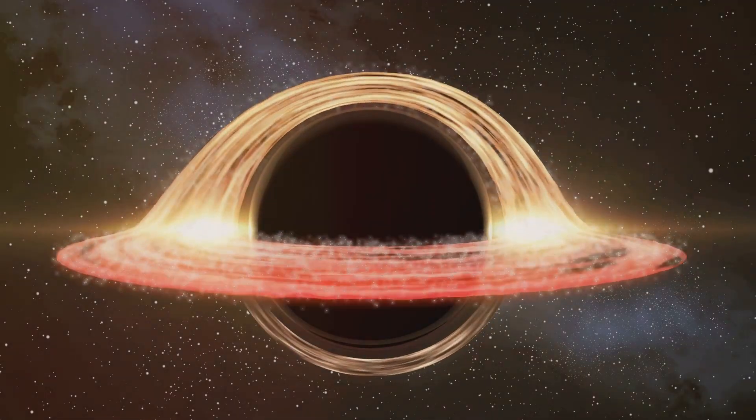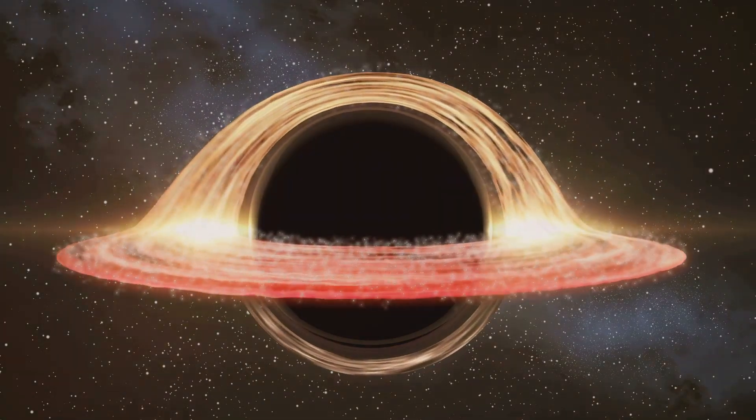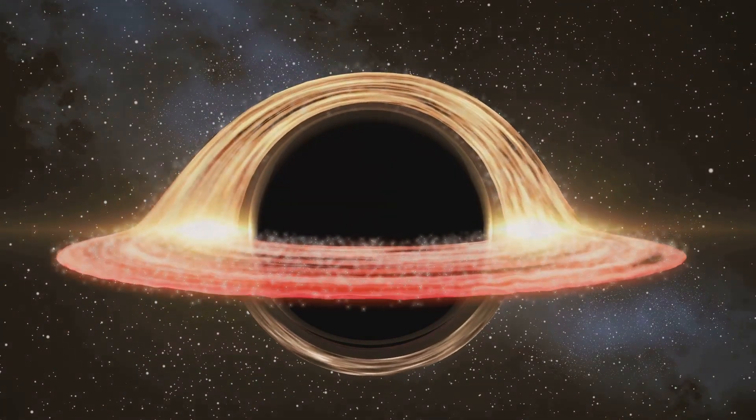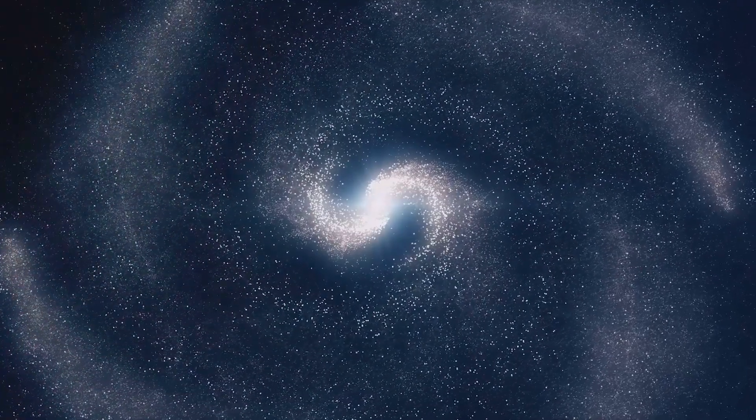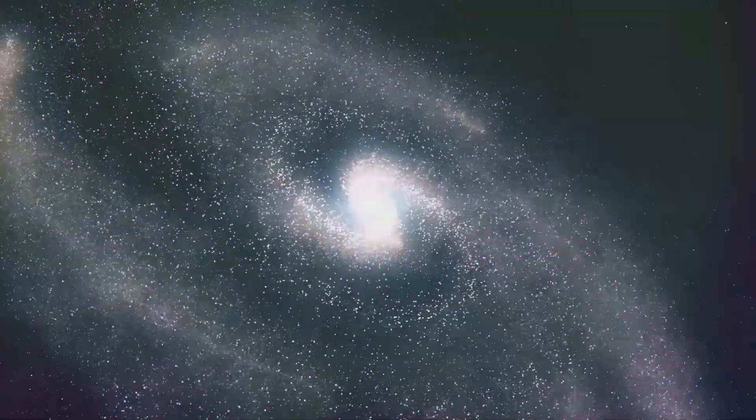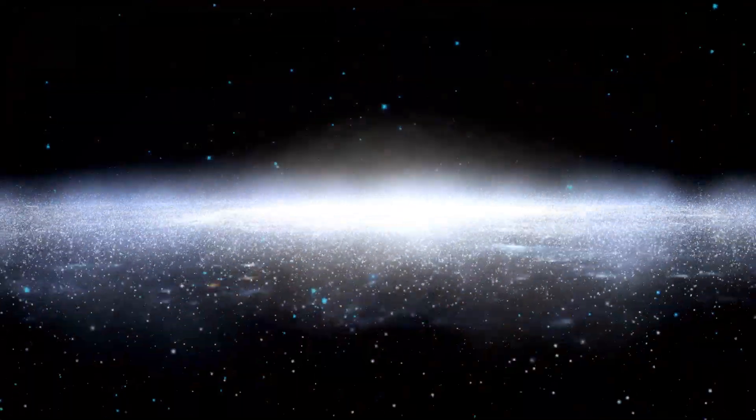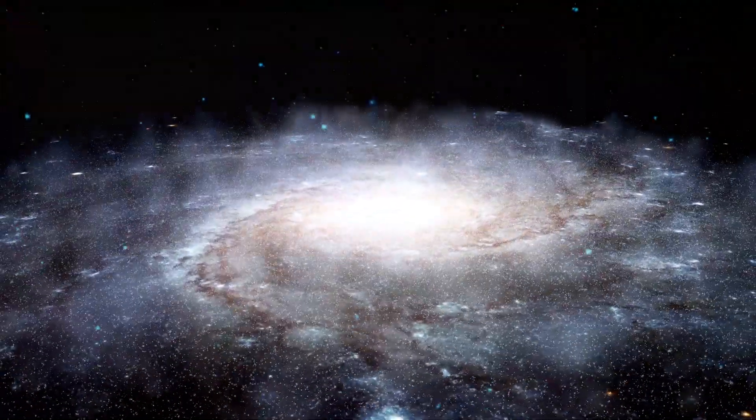To put this into perspective, the amount of time it would take for Sagittarius A to lose a significant portion of its mass is on the order of billions of years. Any hypothetical scenarios about the disappearance of Sagittarius A need to consider the complex dynamics of the Milky Way. The gravity from billions of stars, gas clouds, and dark matter helps keep the galaxy stable.